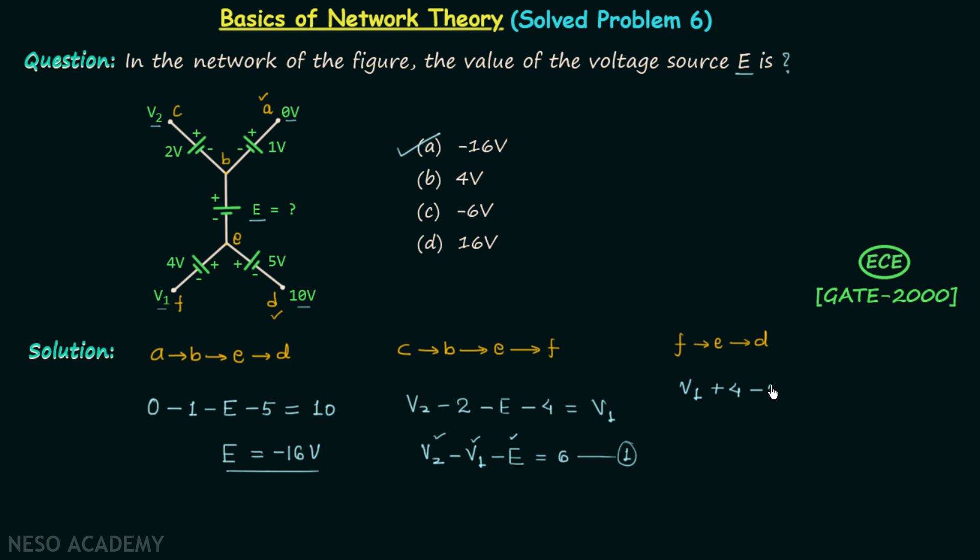Minus 5 equal to 10. When you solve it, you will get V1 equal to 11, so V1 is equal to 11 volts.